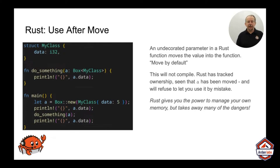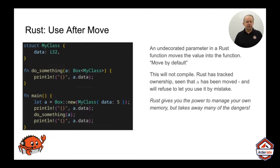You cannot make a use-after-move bug in safe Rust in any way that will compile — the compiler simply refuses to make the binary at all. Search through the CVE database and you'll see that use-after-move has caused all manner of problems, to the point that sometimes you'll find C++ forums debating whether move was a bad idea to begin with.